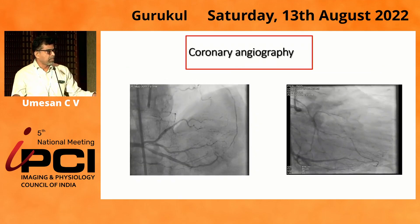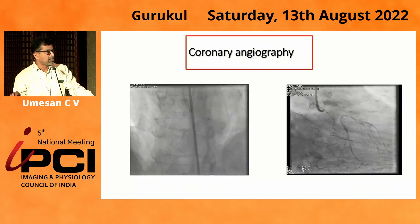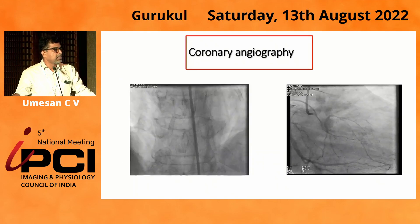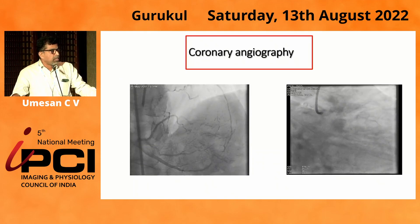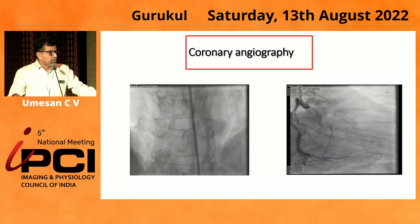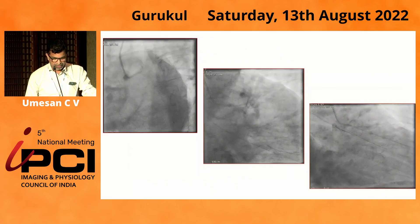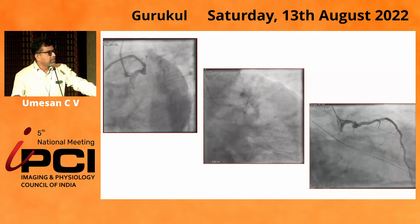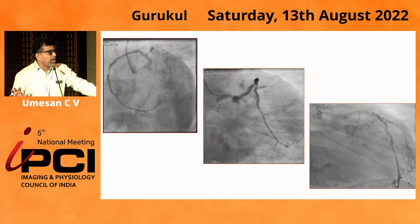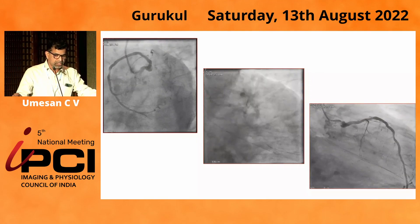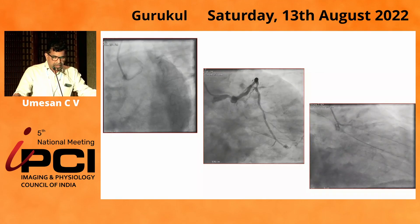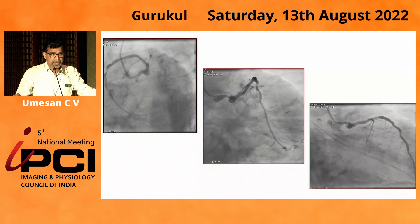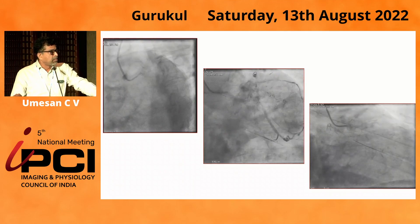This is his right coronary angiogram. He has patent stents in the right coronary artery with no significant flow-limiting disease. His circumflex system was fully filled retrogradely from the right coronary system. The interest is in the left coronary. In these caudal views, we can see that there is some bulge in the proximal left coronary system, the circumflex is totally occluded, and the stent in the LAD is patent with no significant disease in the distal LAD.